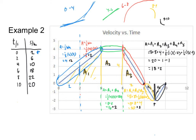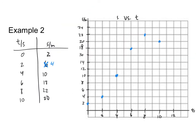I just realized I made a mathematical error. The first area is not four — it's actually two, because I forgot to multiply by one-half. So at two seconds, the position is actually four, not six. I'll go ahead and fix that on the next slide.